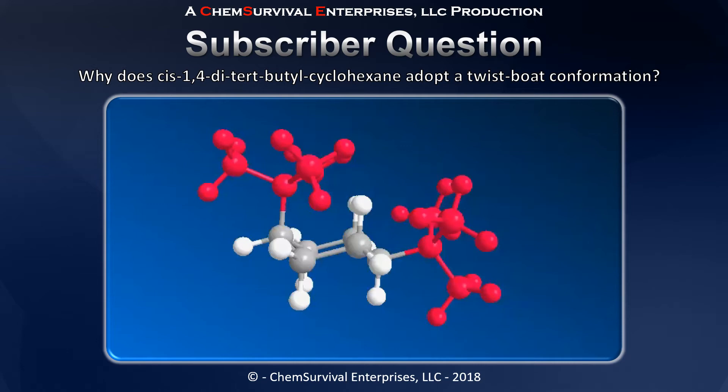Hey everyone, Professor Davis here from ChemSurvival.com and the YouTube channel ChemSurvival. In this short video I'm going to explain an answer to a subscriber question: why is it that cis-1,4-di-t-butyl cyclohexane adopts a twist boat conformation instead of a chair conformation?